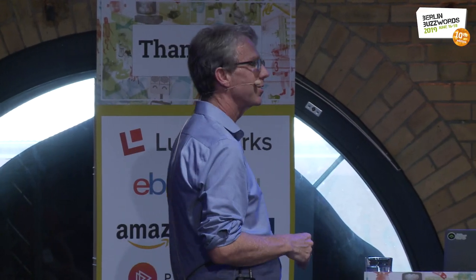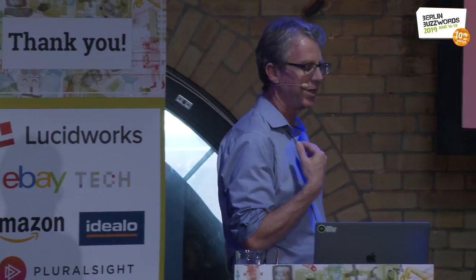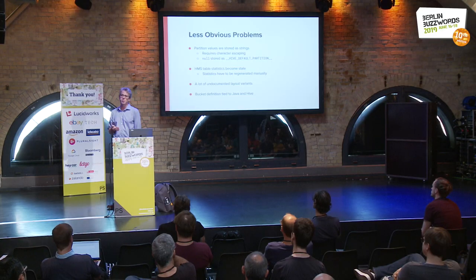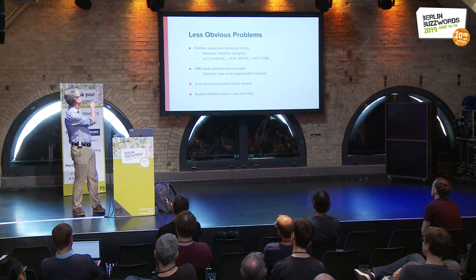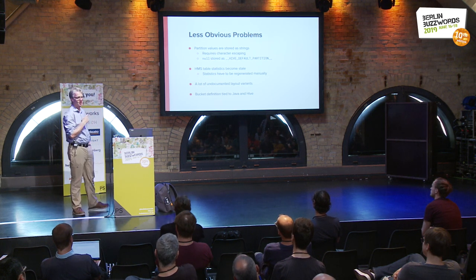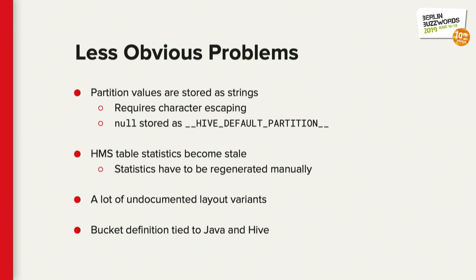The third problem is that the directory layout in S3 creates hot spots that are really hard to work around. There are also less obvious problems. First, because all partition values are being stringified, cases like null get translated to this crazy Hive default partition thing. Another one is that file statistics become stale, so it's possible to get incorrect results based on stale information in the Hive metastore without even knowing it.